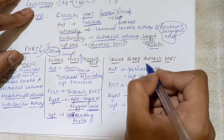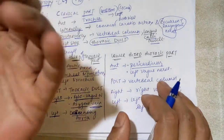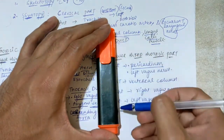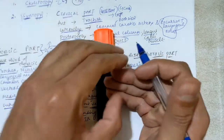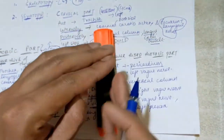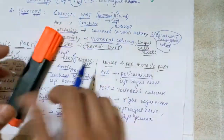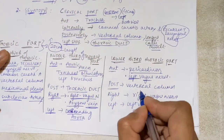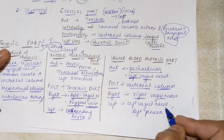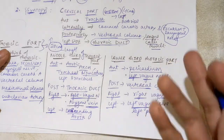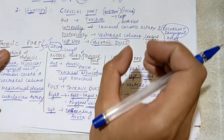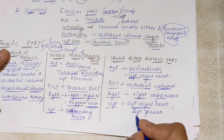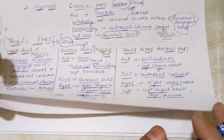In the lower third of the thoracic part, anteriorly there is the pericardium — the outer wall of the heart — covering the anterior side of the lower thoracic esophagus. The left vagus nerve comes to the anterior side in the lower part. Posteriorly there is the vertebral column. On the right side is the right vagus nerve, and on the left side the left vagus nerve, which may sometimes shift anteriorly. The left pleura of the left lung can also be seen on the left side.